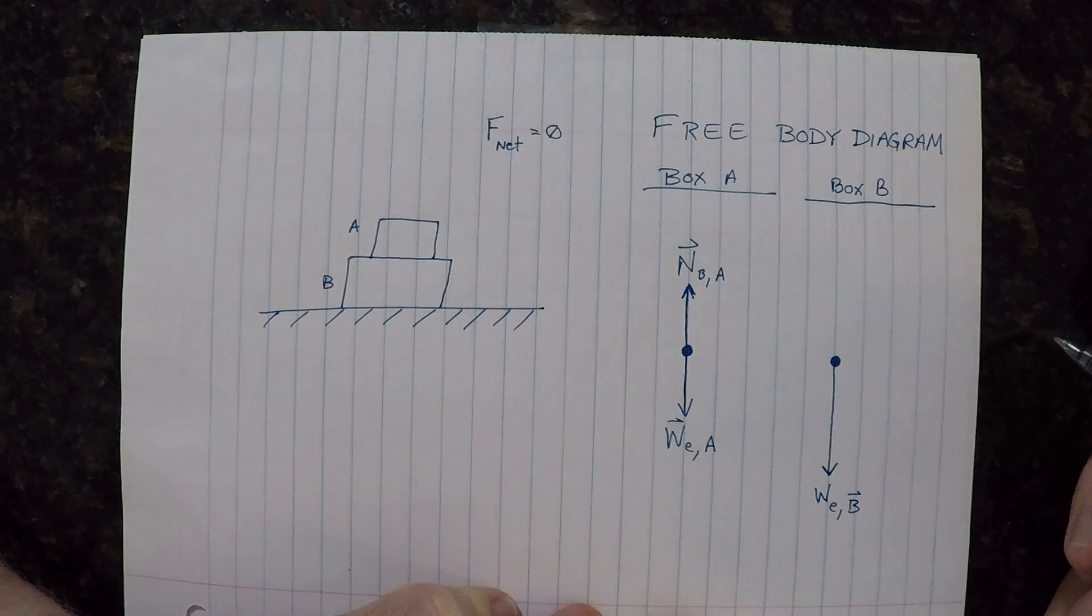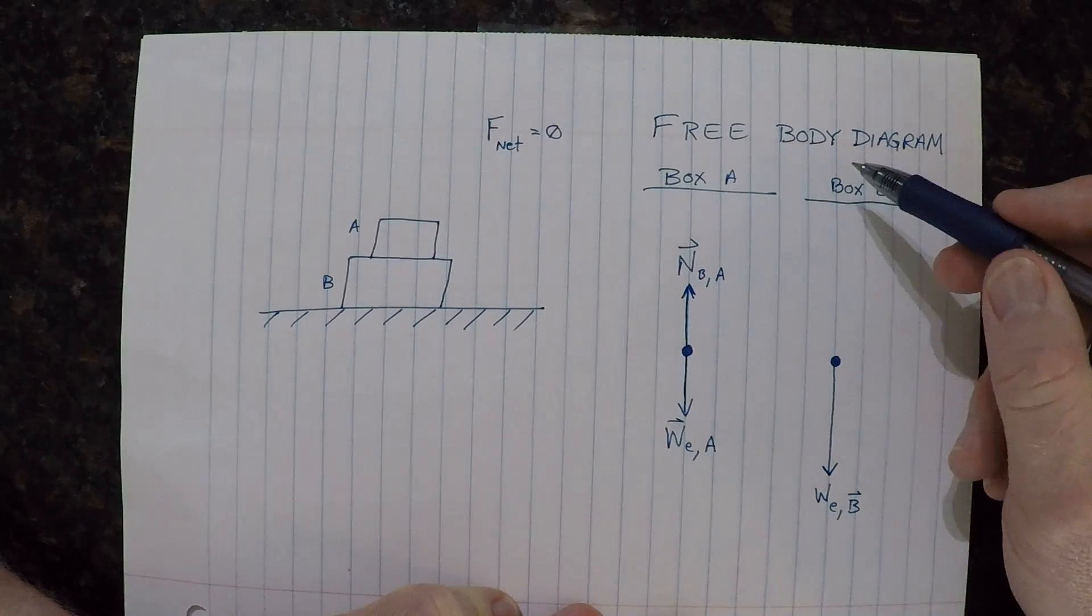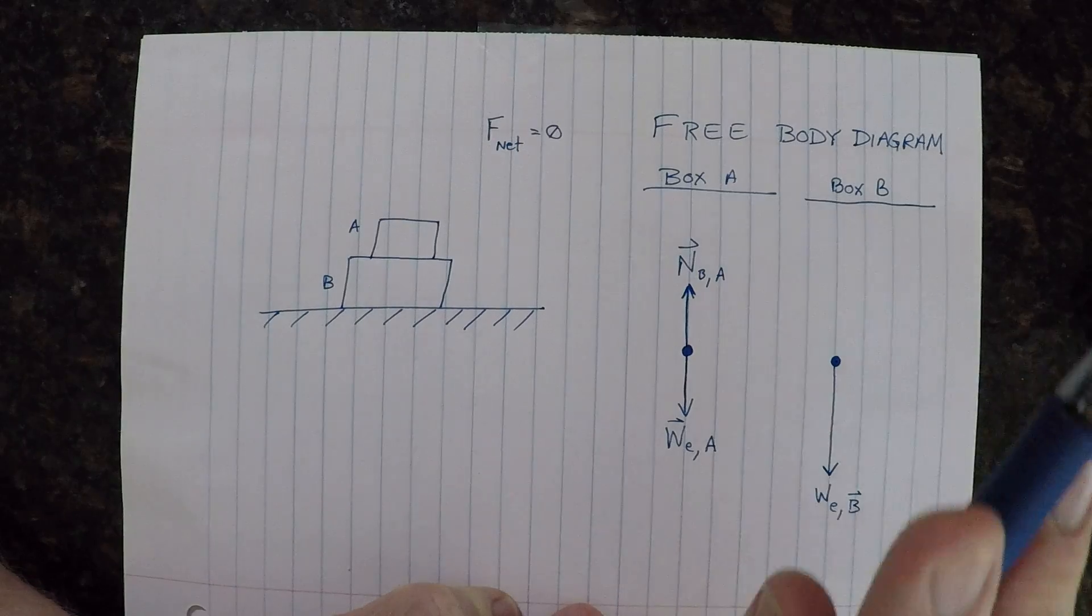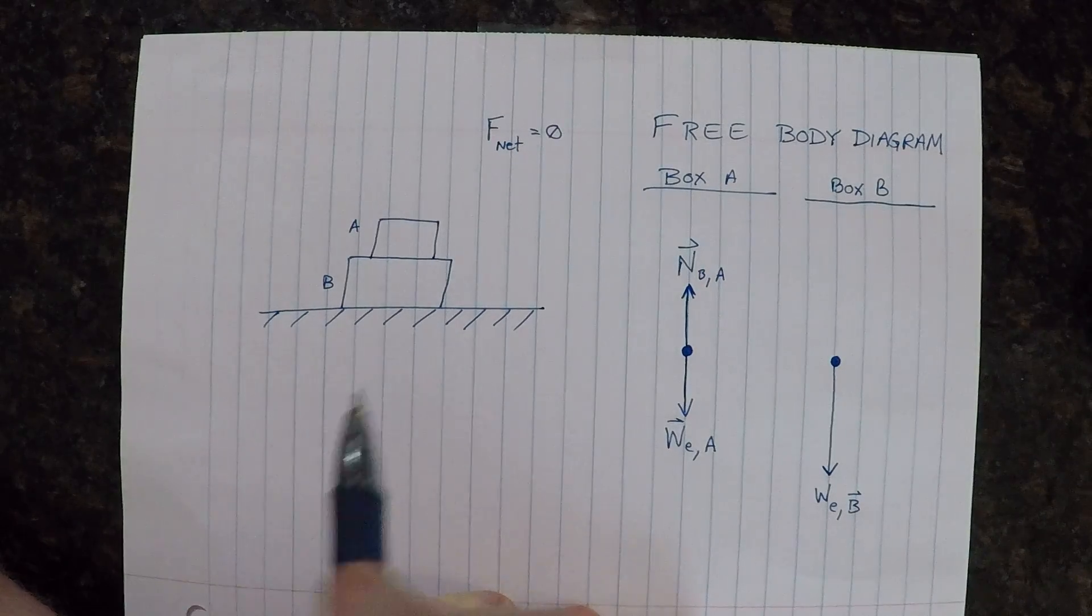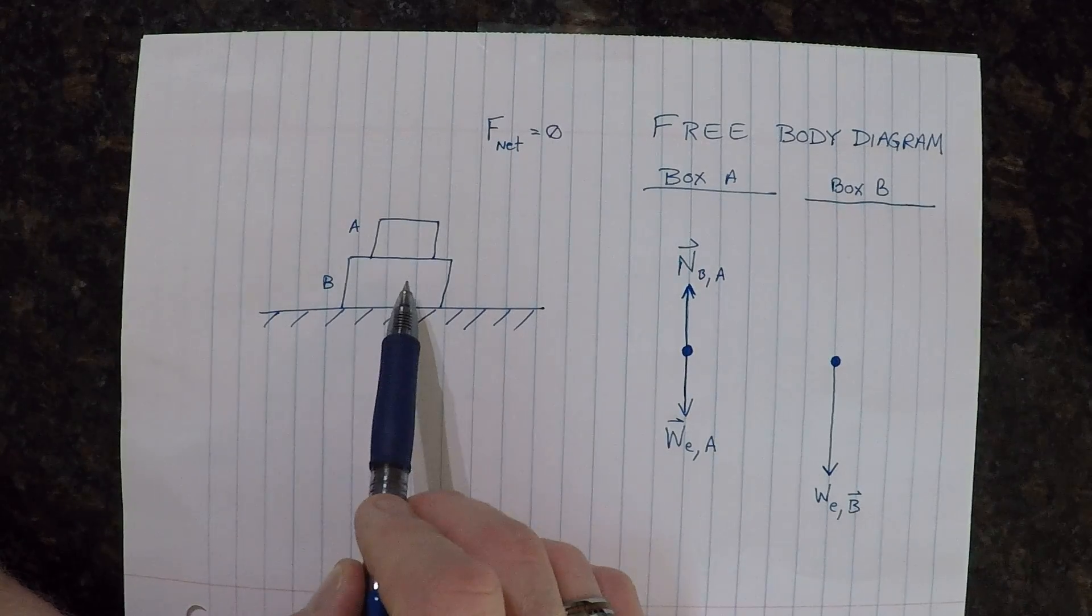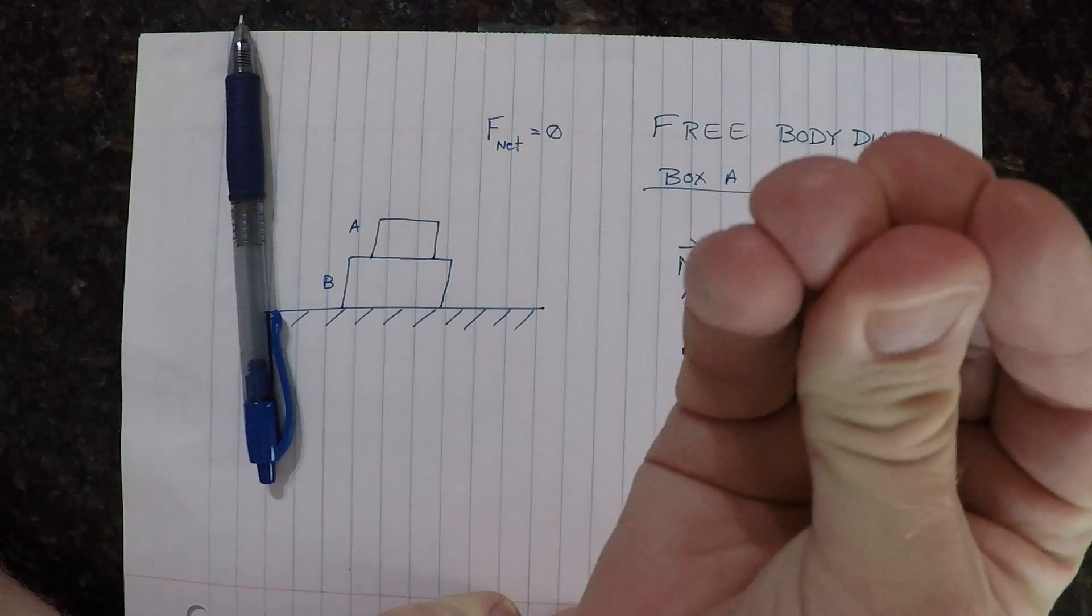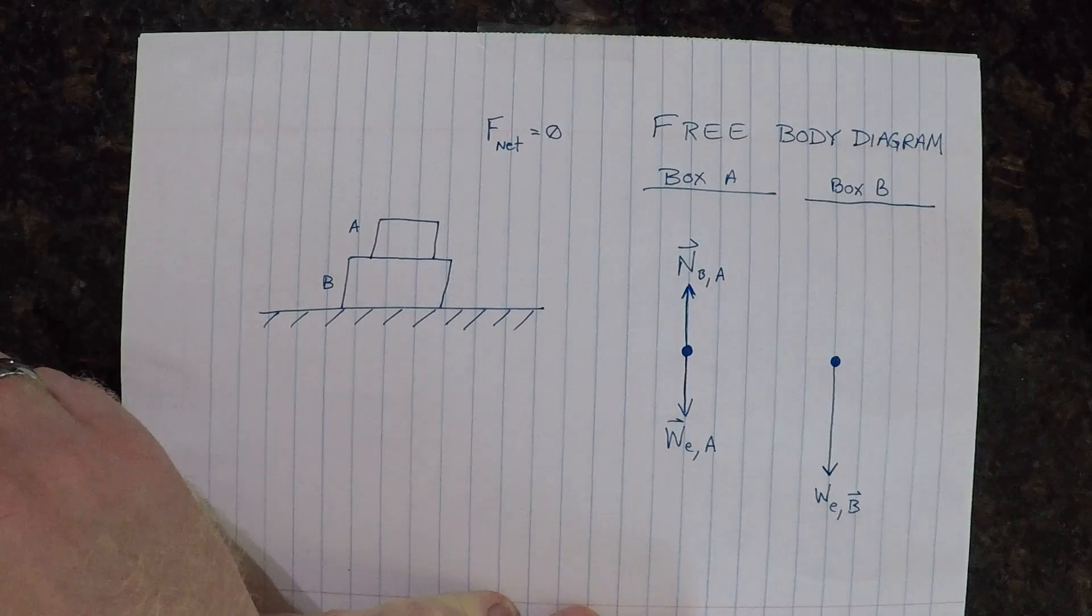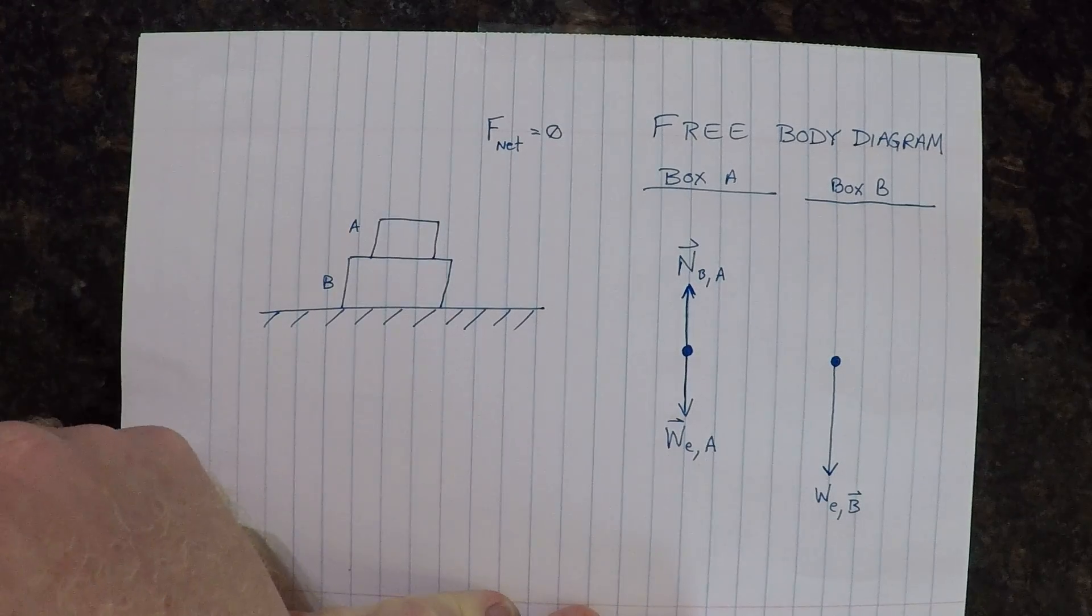Which means that there is a normal force pointing up to counteract this. However, there's one more force we need to take into account. Box A is on top of box B, which means, because they're in contact, there is a contact force. It is a normal force. Normal meaning perpendicular to the surface.